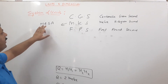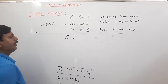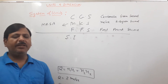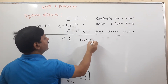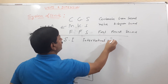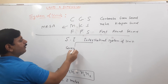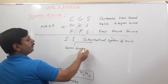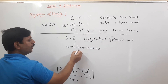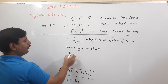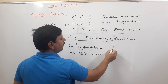Current is measured in the form of ampere. The latest system we need to see is the SI system — the International System of Units. This system contains seven fundamental units, two supplementary units, and a large number of derived units.